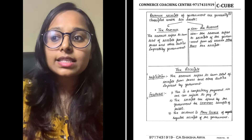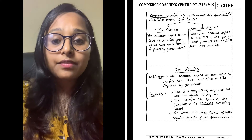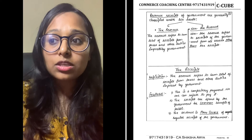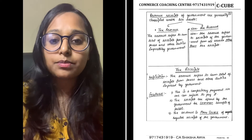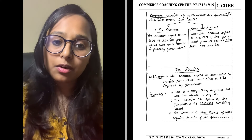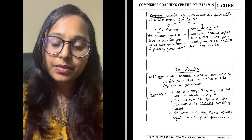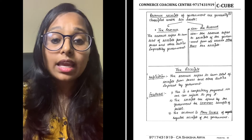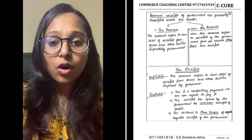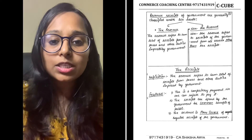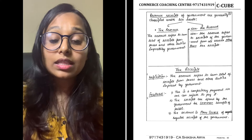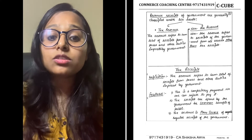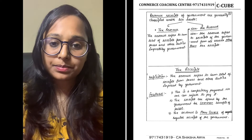Third, tax revenue is the main source of regular receipts of the government. This is the government's main source of income.